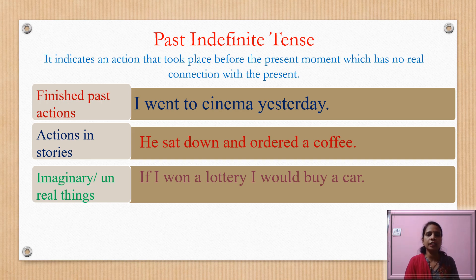The second use is for actions and stories. For example, 'He sat down and ordered a coffee.' Story sequences are also written in past indefinite tense. For example, 'If I won a lottery, I would buy a car.'